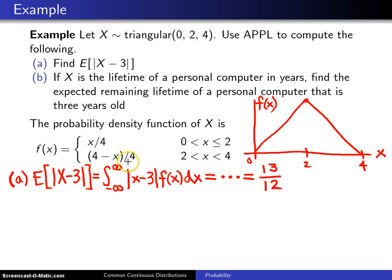Here is the probability density function. That's what we have drawn here. But if a personal computer has made it to 3 years, then it has a conditional distribution. Remember, we've got to move this up so that it will integrate to 1. It has a conditional distribution that looks like this. And we want that mean of that conditional distribution.